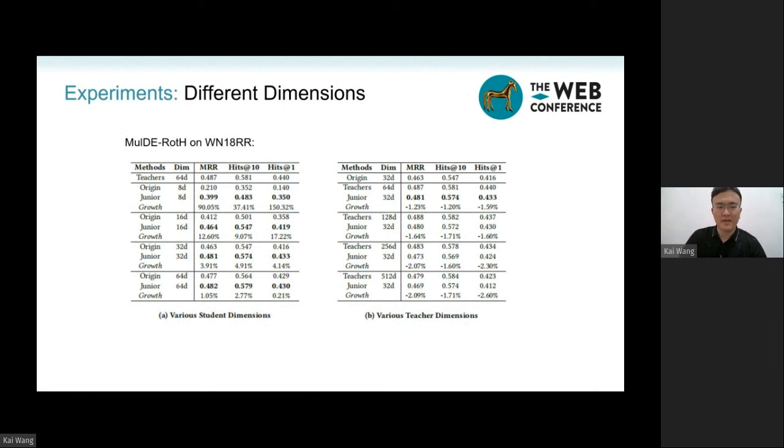to save storage space, we suggest to use 32-dimensional models in actual applications. The right table indicates that the performance of the teacher ensemble is similar when its dimension is more than 64.